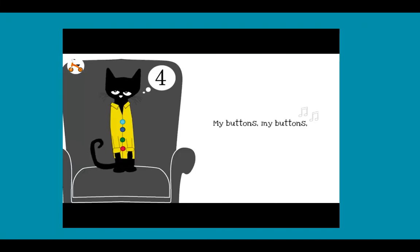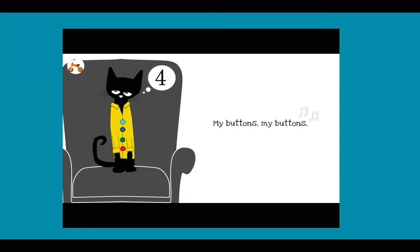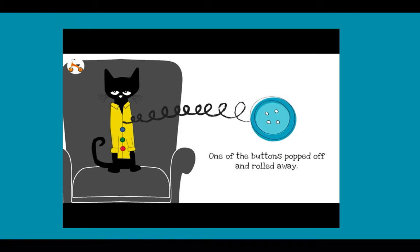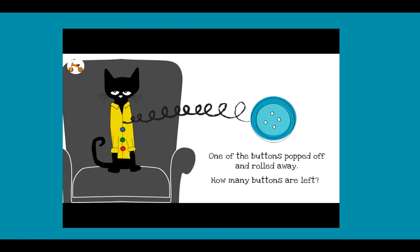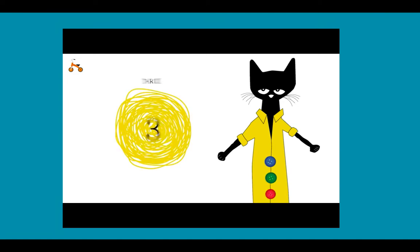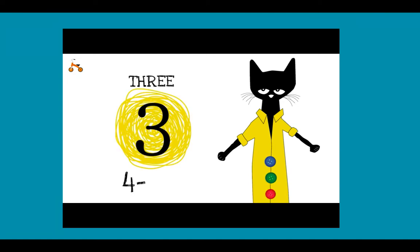My buttons, my buttons, my four groovy buttons. Oh no! One of the buttons popped off and rolled away. How many buttons are left? Three! Four minus one equals three.